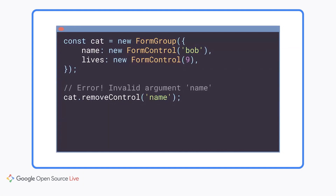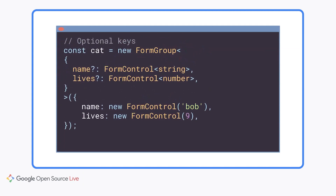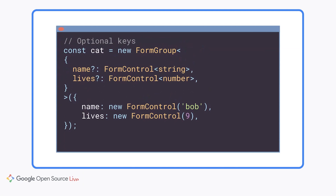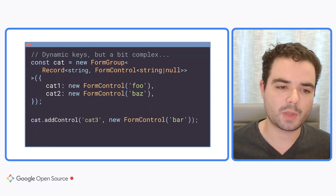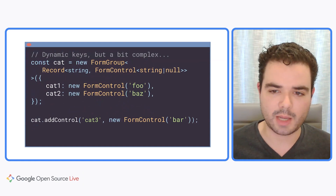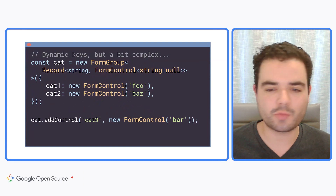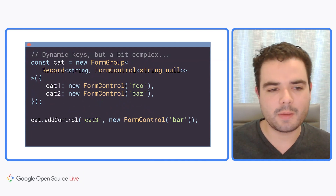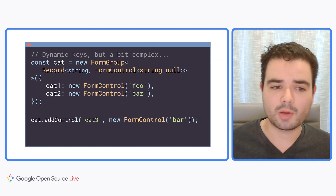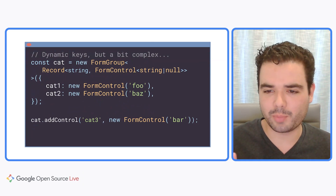Starting with known optional keys: sometimes you want to be able to freely remove keys from your form. If we try to call removeControl on the name key, that's an error because the control is not marked optional. With typed forms, we can now explicitly specify which keys are optional using TypeScript's question mark notation for an optional property. This allows the type system to enforce that we safely handle controls that might be missing. There's also another common kind of mutable group involving unknown keys but with homogenous values — this is actually similar to a built-in TypeScript type called Record.